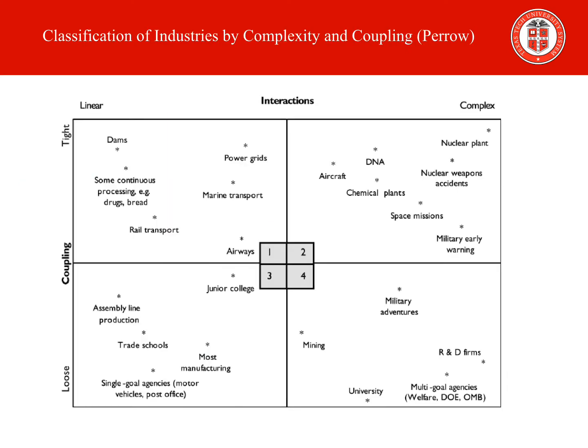Charles Perrow presented a figure in a book published in 1984 for classifying organizations based on their degree of complexity and coupling. In this figure, the opposite of complex is linear, and those organizations classified as HRO sit in the upper right corner. As an example, a university is ranked in the lower middle of the fourth quadrant — at a university, administration, faculty, and students largely work independently, with no need to coordinate activities daily, making it very loosely coupled.